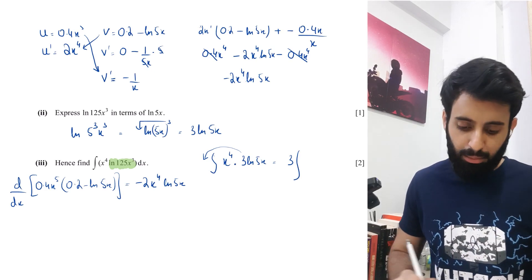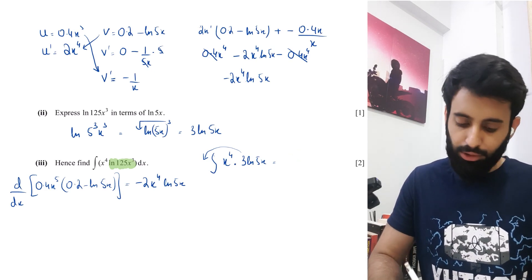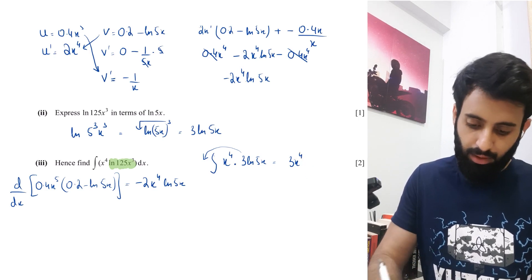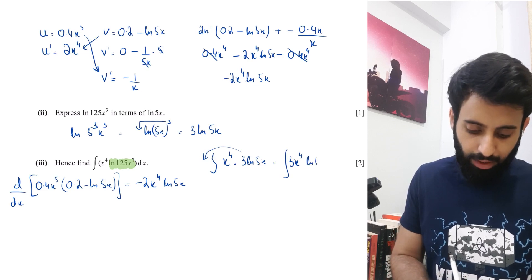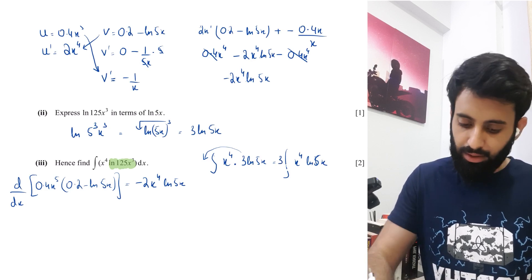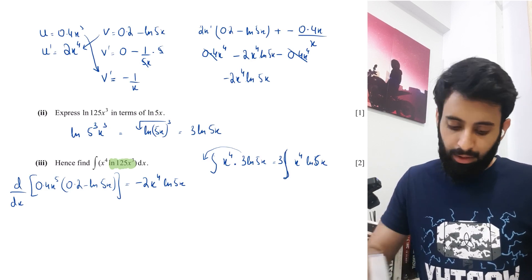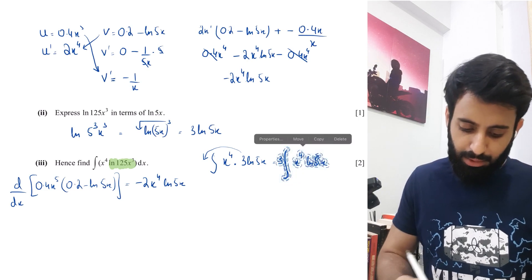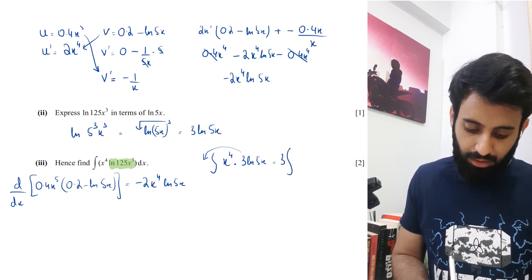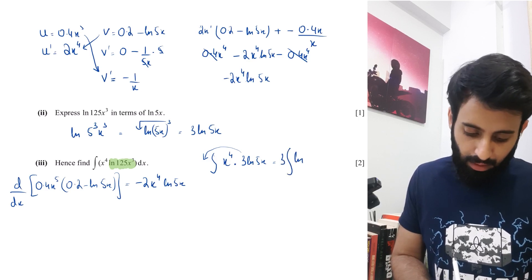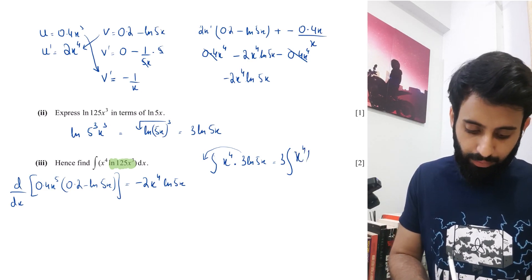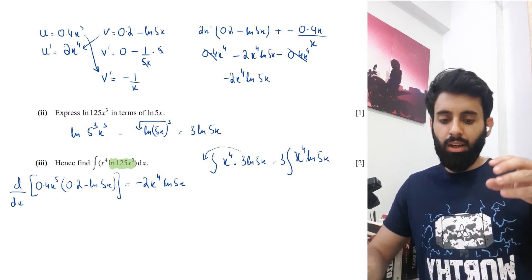So the integral of x^4·ln(125x^3) becomes the integral of x^4 times 3·ln(5x), which equals 3 times the integral of x^4·ln(5x). Since 3 is a constant, it can be taken outside the integral sign — it's still the same thing.